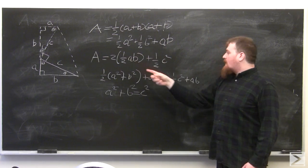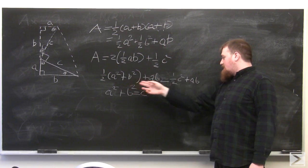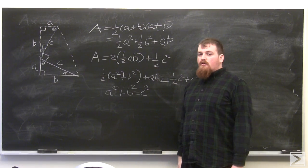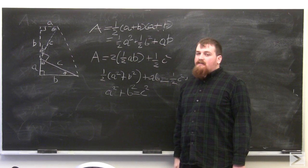A squared plus B squared equals C squared. This proof was given by then US Senator James Garfield in 1876.